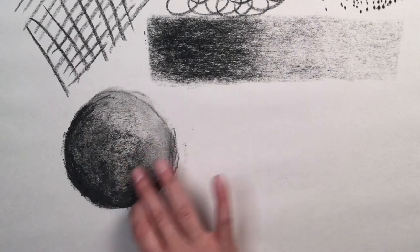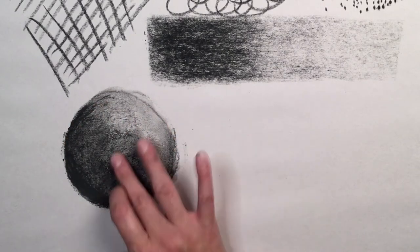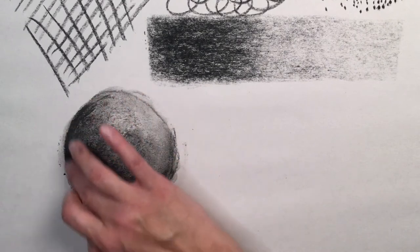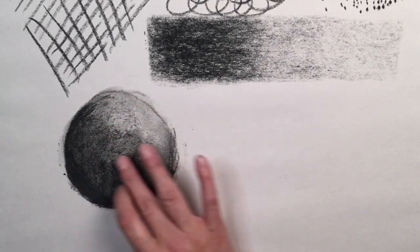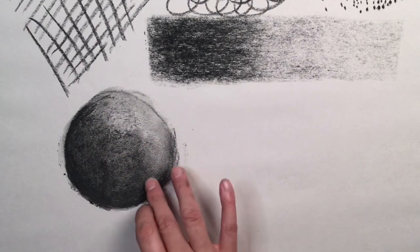Okay I think I'm happy with how things are blended out now. I do want a little more lightness in that top right hand corner of my sphere so I am going to come back in with a white chalk pastel.